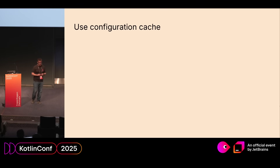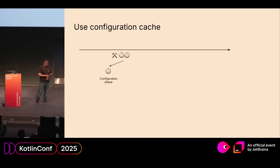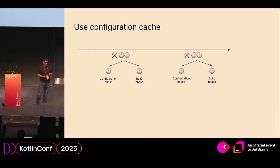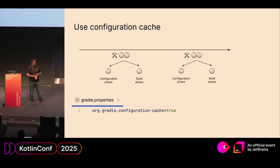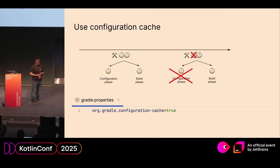A second similar thing is configuration cache. When building, under the hood the build is composed of two phases: the configuration phase, where Gradle prepares the build, compiles the build script, and prepares all the dependencies; and the actual build phase. Even if we do another build with a tiny change, there will still be a configuration phase even if we didn't change anything in the build script. Gradle has a cache for that — you can enable the configuration cache in Gradle properties, and then the configuration phase will be cached, assuming you didn't change anything in the build script, significantly reducing build time. For larger projects with multiple modules doing just a tiny change, it may be that the build phase is smaller than the configuration phase, and this will save a lot of time, significantly reducing the feedback loop.